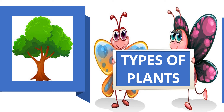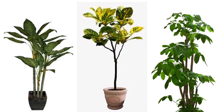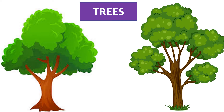Types of plants. Some plants are big and some plants are small. Plants are divided into many types, such as trees, shrubs, herbs, climbers, and creepers.